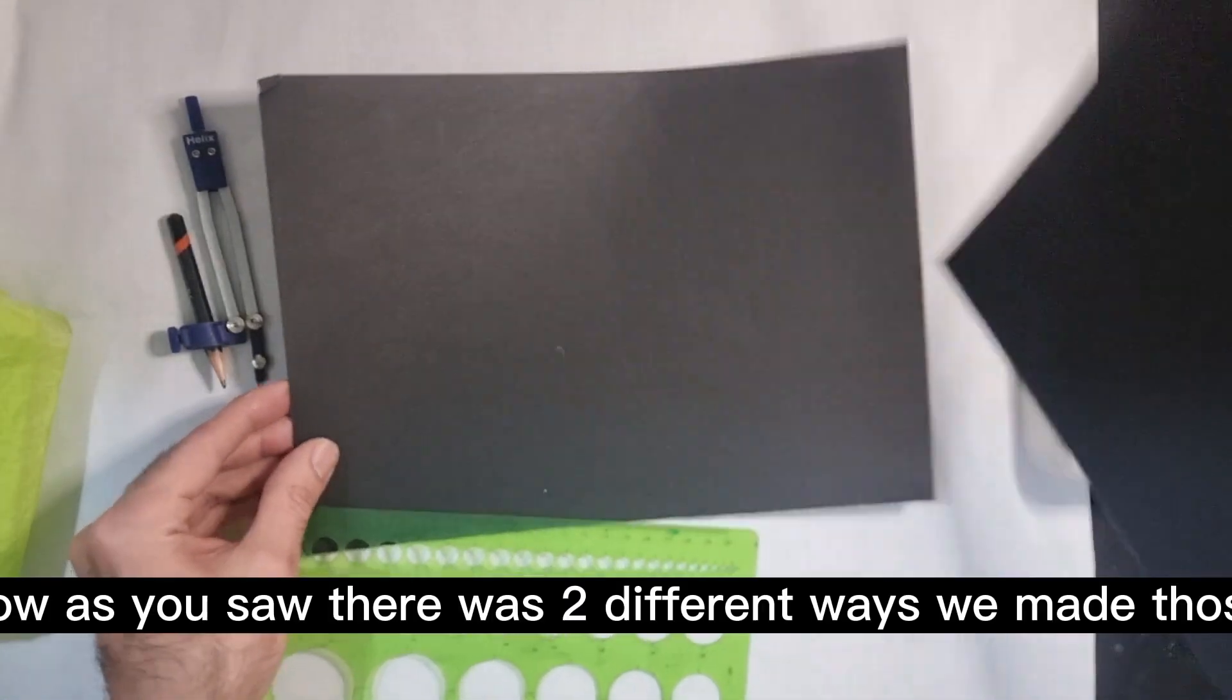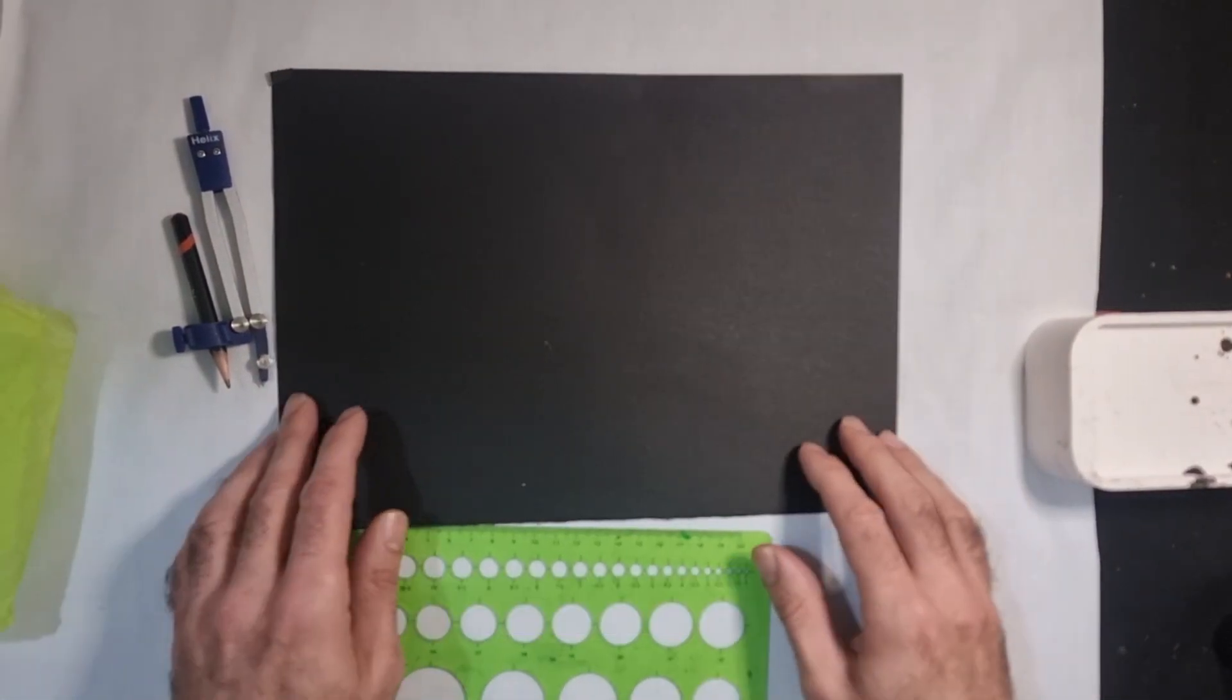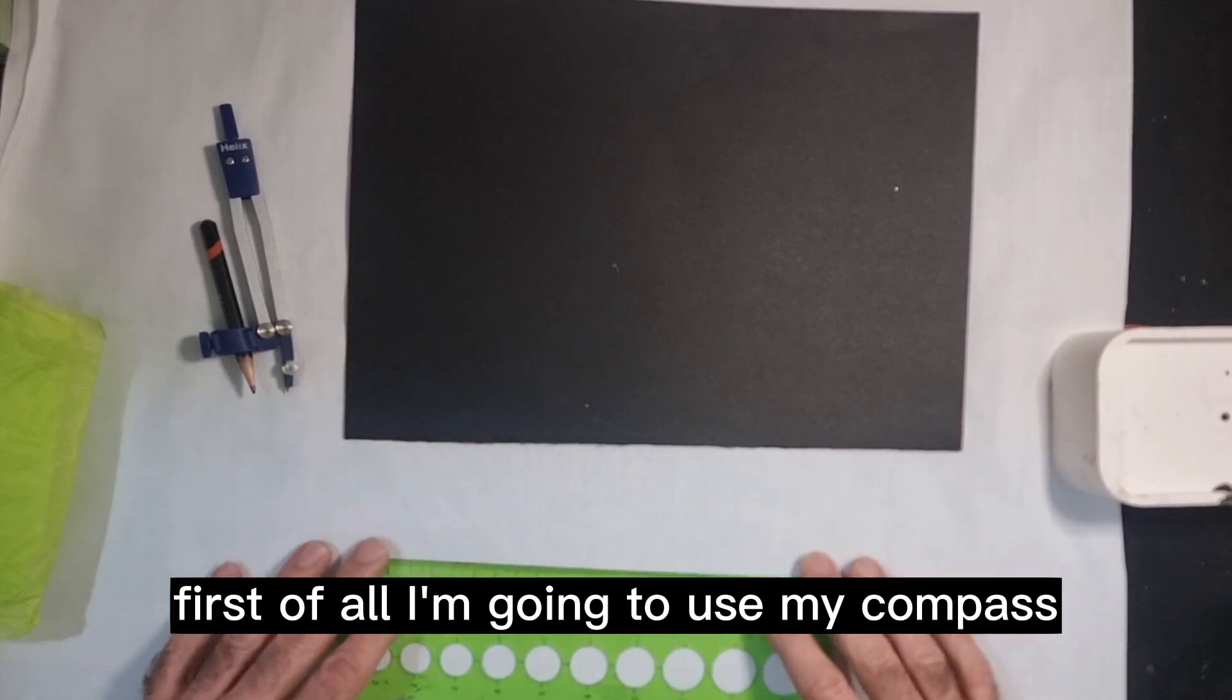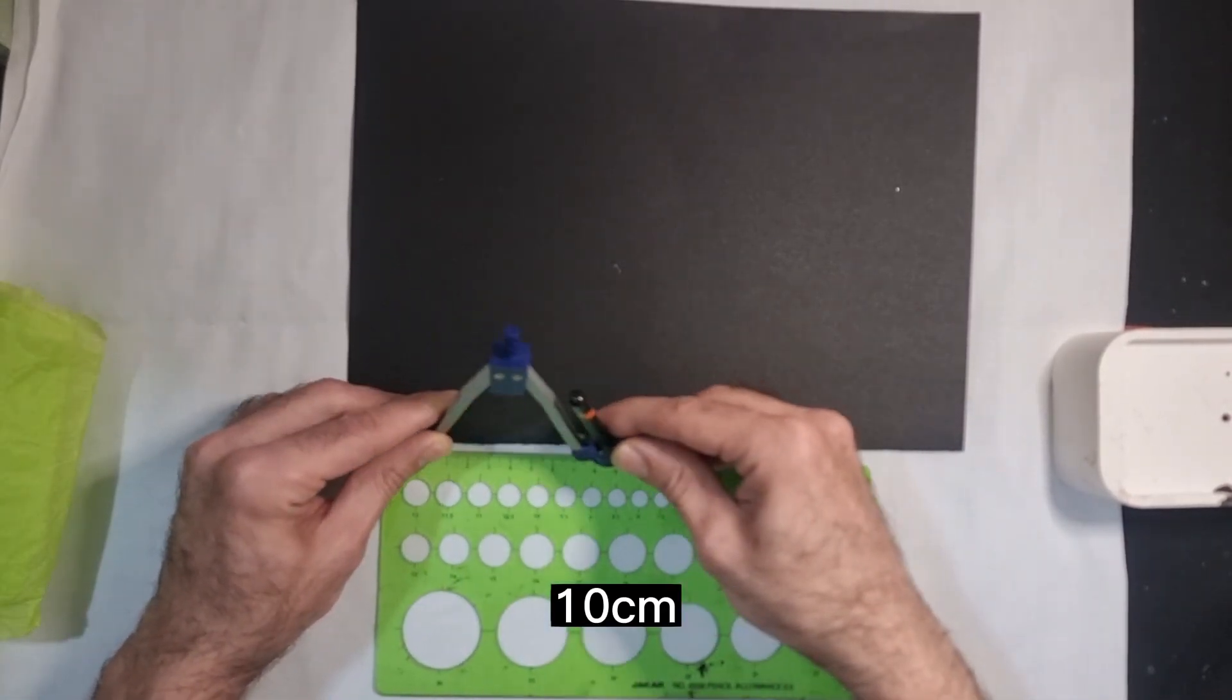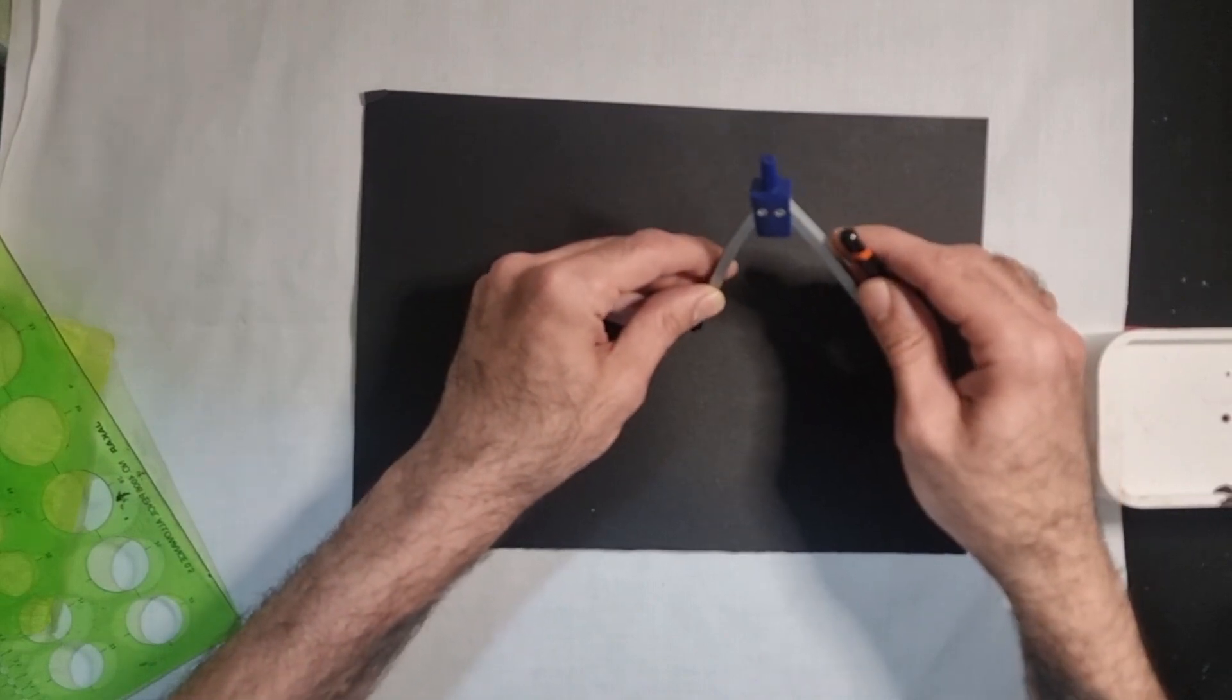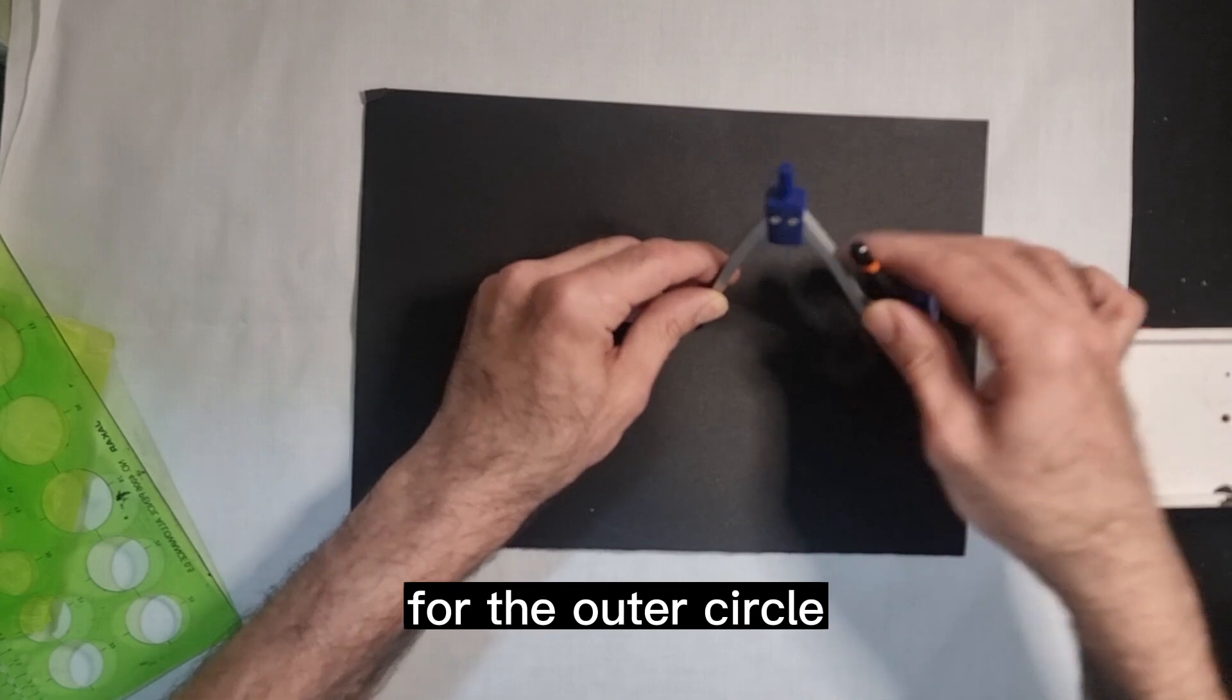Now as you saw, there were two different ways we made those stained glass windows, so this is how we're going to do it. First of all, I'm going to use my compass and I'm going to measure out 10 centimeters and create the outer circle.